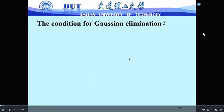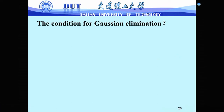Now we understand how to use Gaussian elimination to obtain LU factorization for a matrix, and also to solve linear systems. We know Gaussian elimination is a very good, powerful, and efficient algorithm. Let's consider the condition for Gaussian elimination — that means, if we are given any arbitrary matrix, can we always use Gaussian elimination? This is the feasible condition for Gaussian elimination.